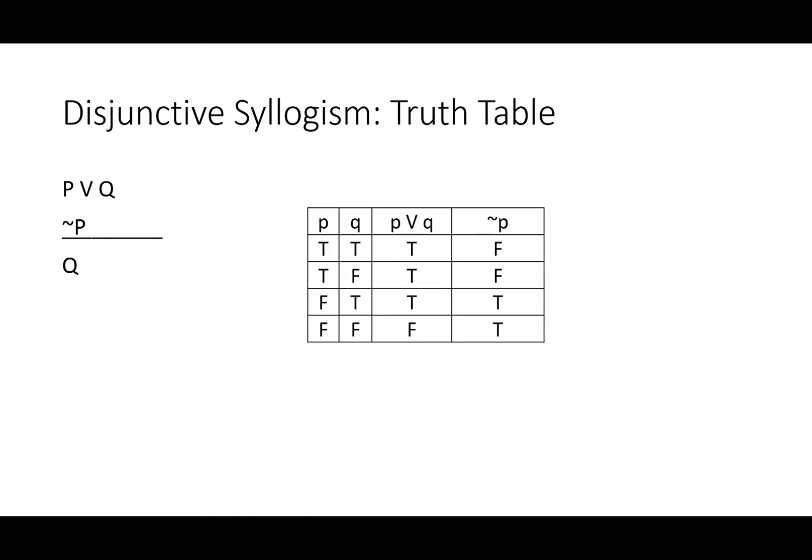We can also prove this with a joint truth table, and you can see that this is a valid argument. First, we'll highlight the only row with all true premises, row three, as that's the only place that P or Q is true, and not P is also true. And we'll see quickly that the conclusion, Q, must be true in that row. This rule is going to work every time. The truth tables just showed us it's valid.